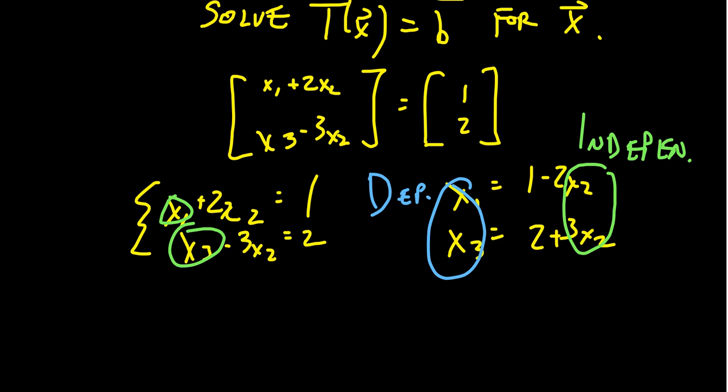Which tells us that we can choose whatever we want. We could choose whatever we want for x₂. Let's just do something simple. x₂, we can pick any number we want. Let's just make our lives easier. Let's pick it to be 0. If you choose x₂ to be 0, that means x₁ will be 1, and x₃ will be 2.